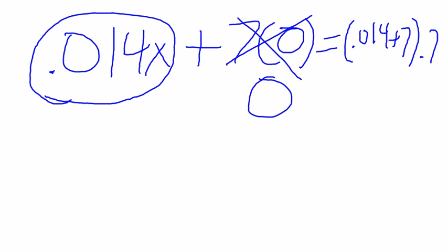Now we just got to do the mass here. So we do 0.014, plus 7, and then multiply that by 0.7. So this over here is 4.9098.